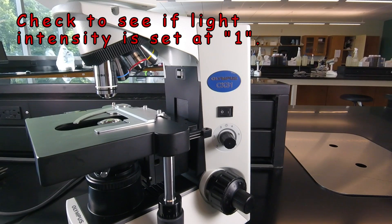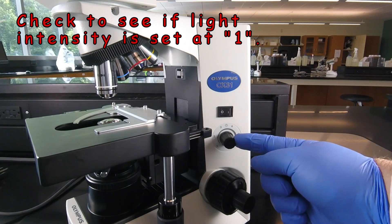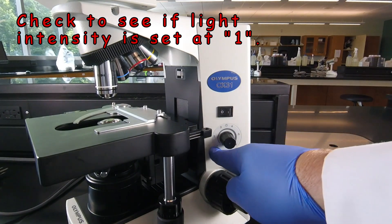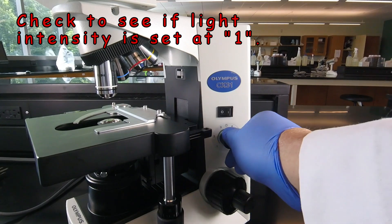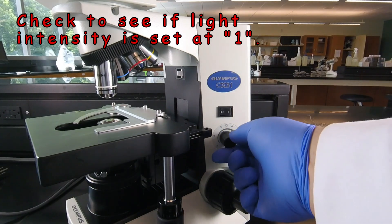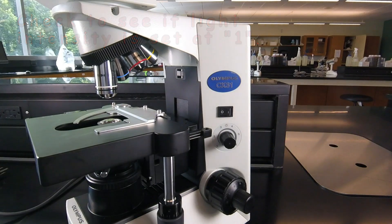Remember, before we plug the microscope in, we check to make sure that the light intensity knob right here is all the way down to 1. If it's not down to 1, then put it down to 1 before you plug it in by turning it counter-clockwise.